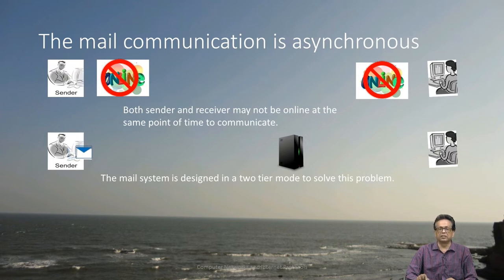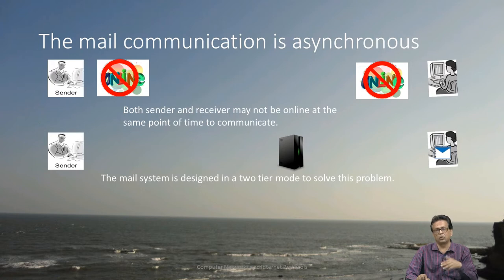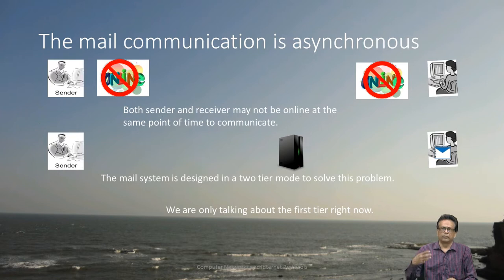When the sender sends the mail, it is received by the intermediary and stored in the mailbox. Whenever the receiver expects the mail, it is delivered to it. This is a two-step process or two-tier model which is very critical. When we look at SMTP later, we will see how these things are carried out, but this is only a small idea about how that happens.